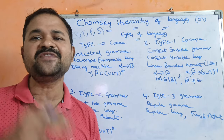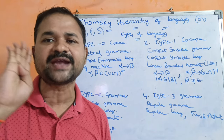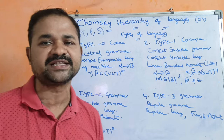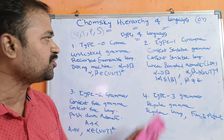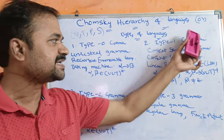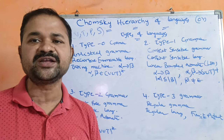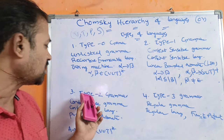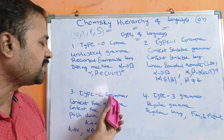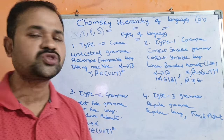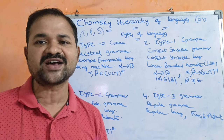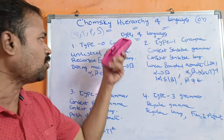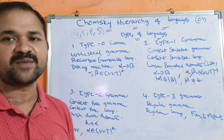Here we mainly have 4 types of grammars. First one is type 0 grammar, second one is type 1 grammar, third one is type 2 grammar, and fourth one is type 3 grammar. So first let us discuss about type 0 grammar.